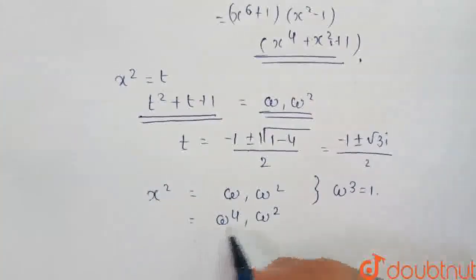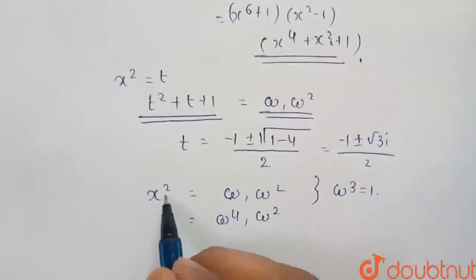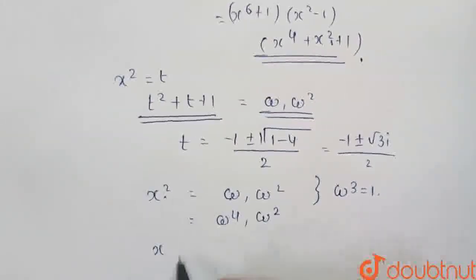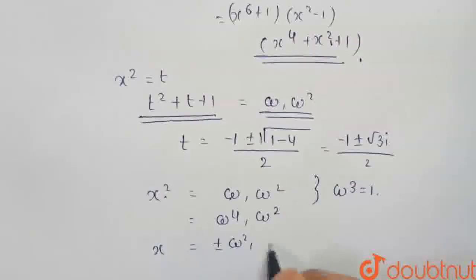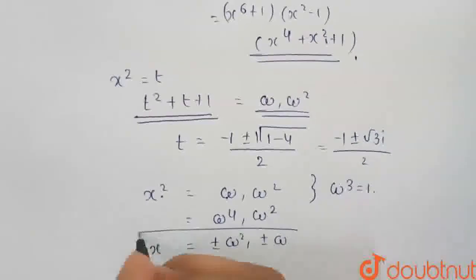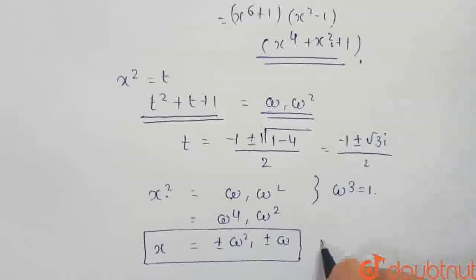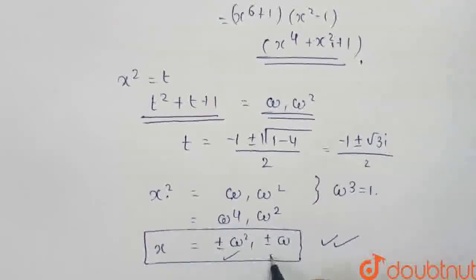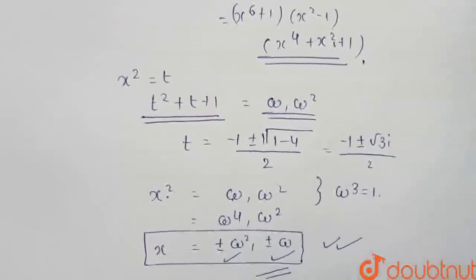Now we can write as, take root both the sides. We get x will be ±ω^2 and ±ω. So the value of x will be ±ω^2 and ±ω. And this is our required answer.